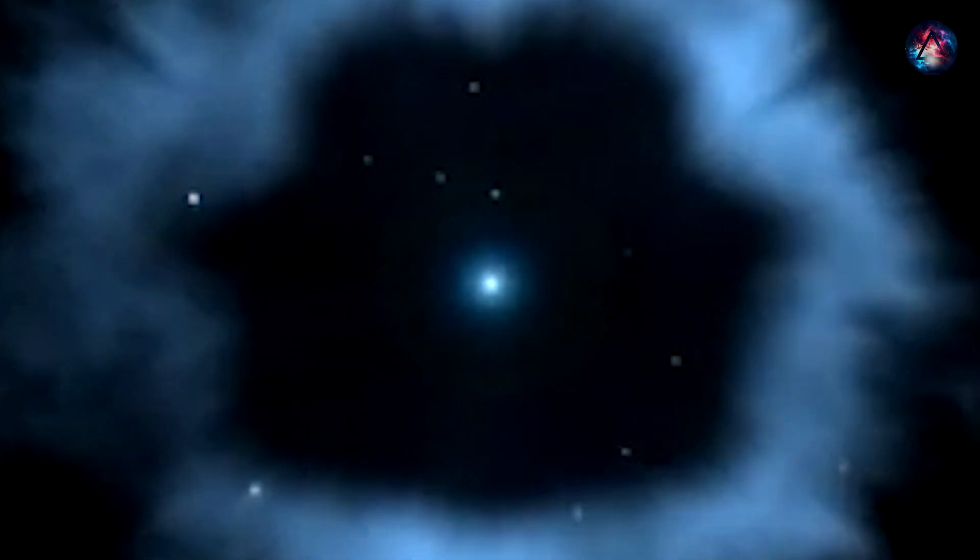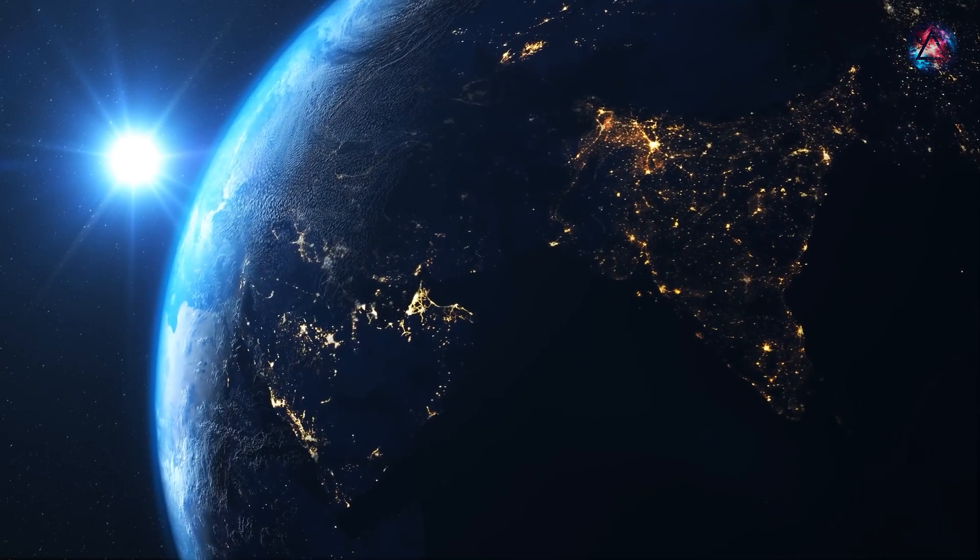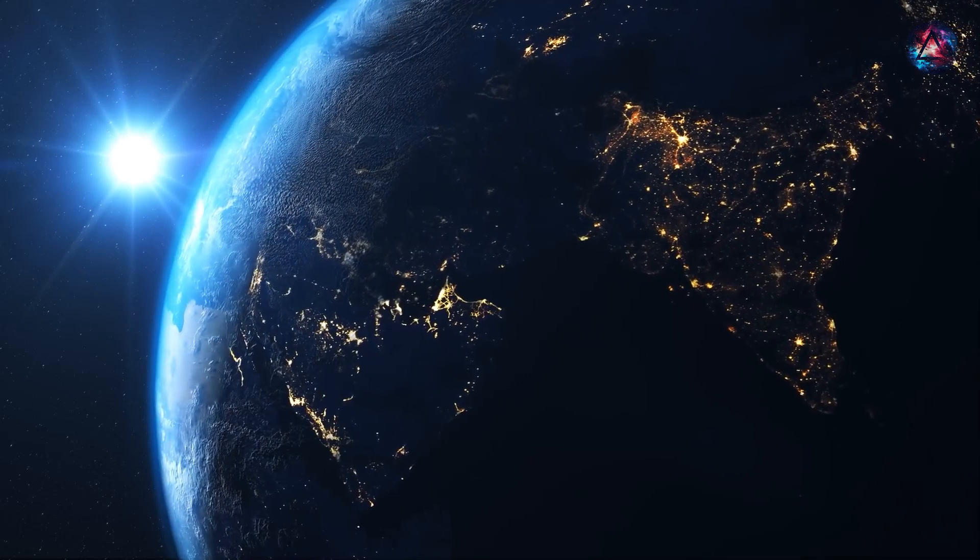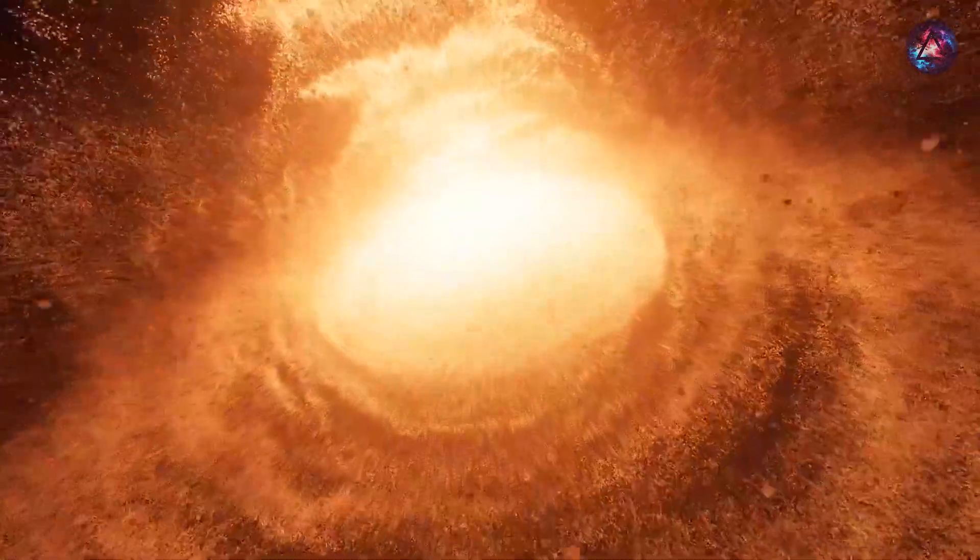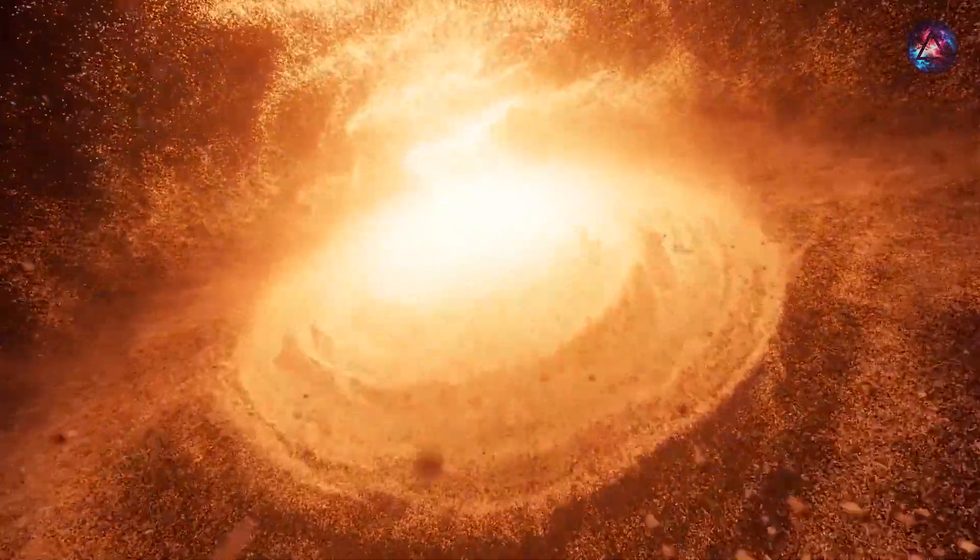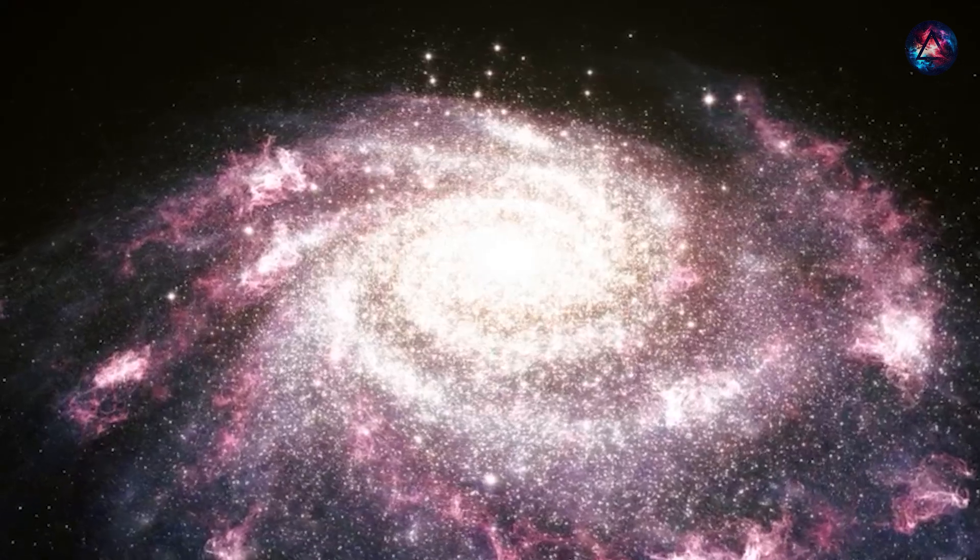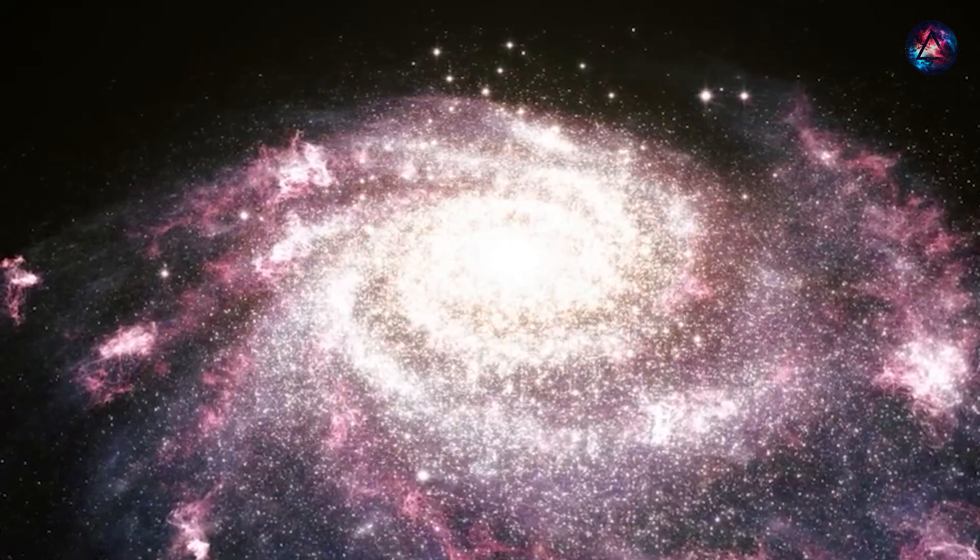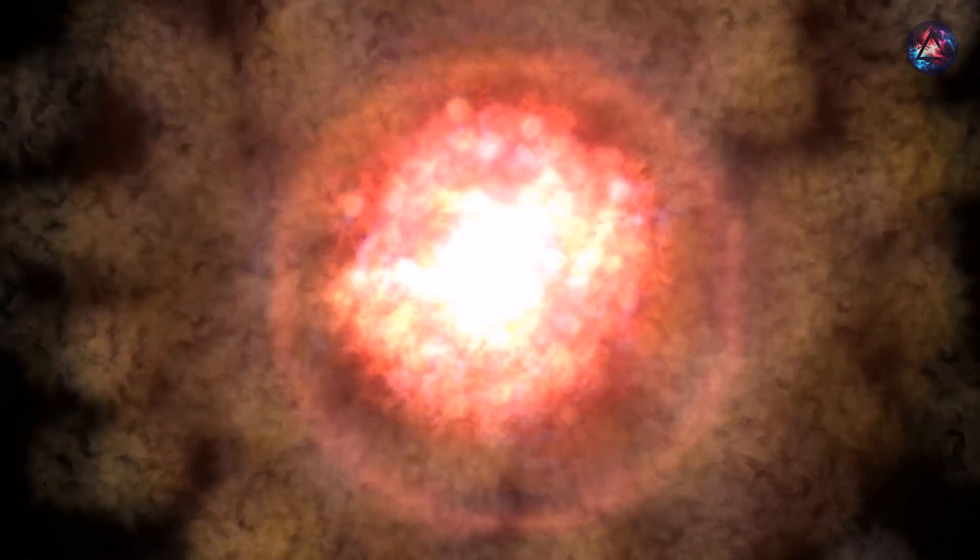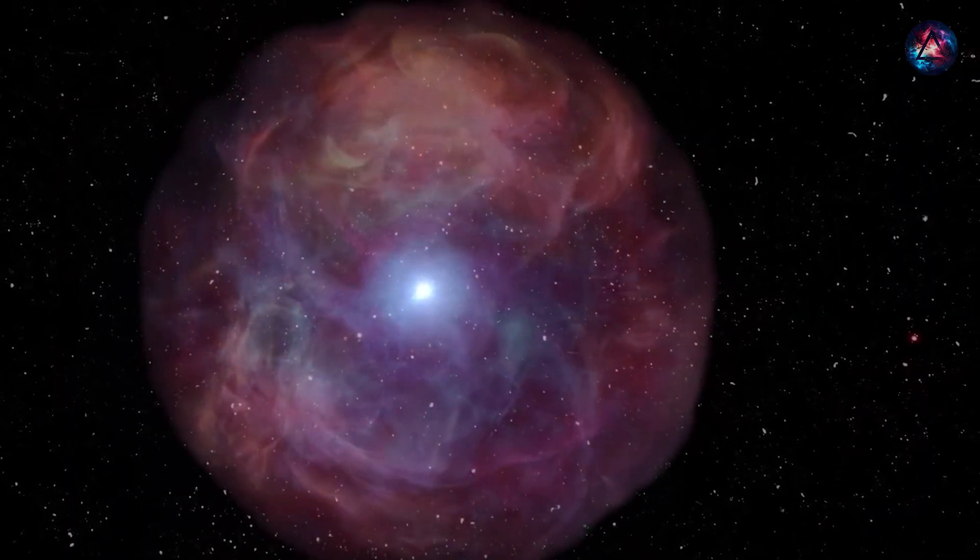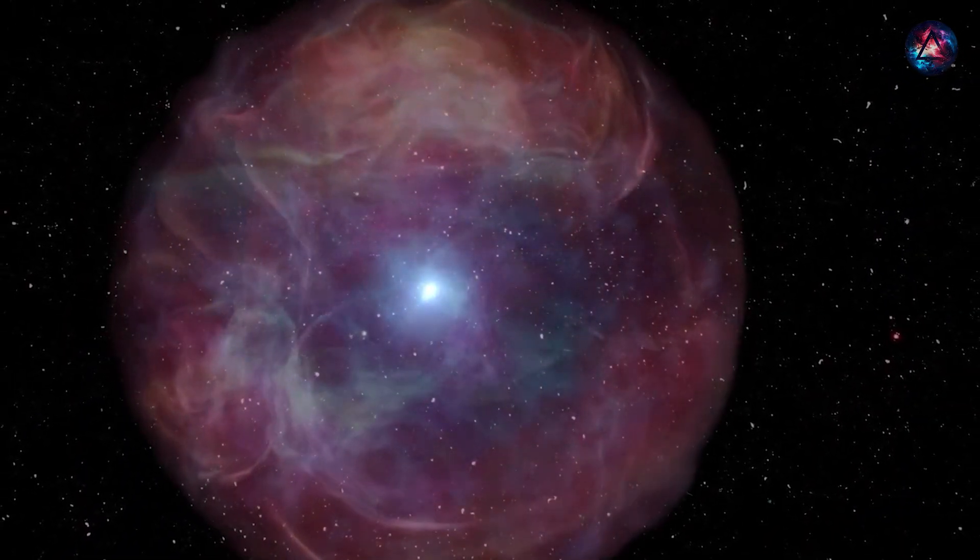While massive stars undergo captivating supernova explosions, their proximity to Earth raises safety concerns due to potential dangers if an explosion occurs within a specific minimum safe distance. Evidence of a starburst around 3 million years ago near Earth has been discovered through the presence of radioactive iron atoms in lunar cores and deep ocean samples. These unique atoms are traces of supernova explosion remnants, enabling scientists to study the nuclear processes driving exploding stars and uncover events predating recorded human history.